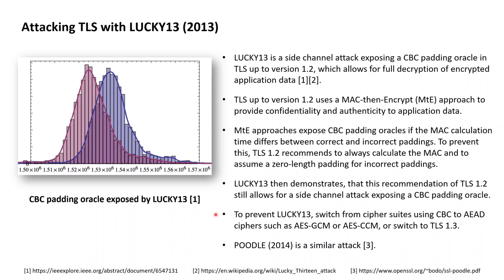Lucky 13 as an attack relies on TLS up to version 1.2 using a Mac-then-encrypt approach, which is an instance of authenticated encryption used to simultaneously provide both confidentiality as well as authenticity to the application data exchanged between a client and a server. The Mac-then-encrypt approach first wraps the plaintext with an authenticity layer by calculating a MAC on the plaintext, and then encrypts both the plaintext together with the just-calculated MAC tag into a ciphertext.